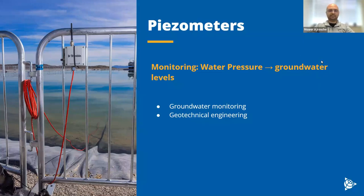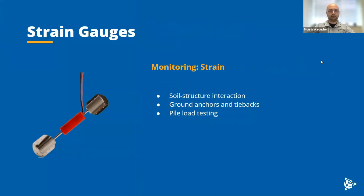We also have strain gauges. Strain gauges are used to measure stress and strain within earth structures such as slopes and retaining walls. They help assess the interaction between soil and structures like foundations, and can measure deformation and stress distribution caused by external loads or ground movements. They can also measure the load and performance of ground anchors, tiebacks, soil nailings, and anchored retaining wall systems.